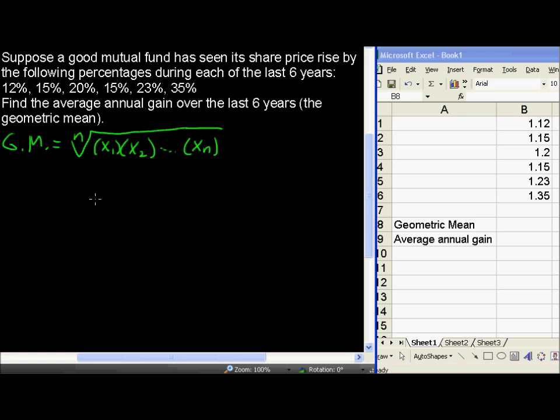And here again we have six numbers. Our numbers in this example are actually going to be 1.12 and 1.15. And the reason for this is because, let's take a look at the 12% for example.